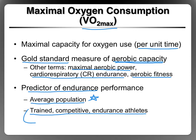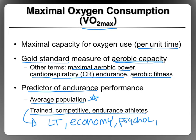There are other predictors that come into play, which we'll talk about in this chapter. Lactate threshold comes into play. Economy of movement comes into play. Other things that come into play, which we won't talk about, are psychological aspects and nutritional aspects. But we will talk about economy and lactate threshold as predictors of aerobic performance.